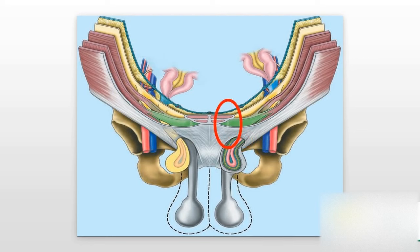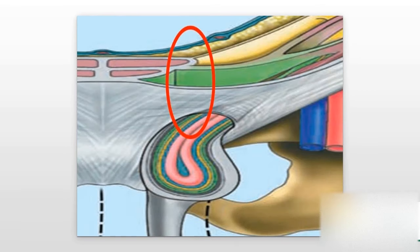There is another type of hernia. If there is weakness of the muscles and the layers sitting deep to the external ring, then the bowel could essentially take a much more direct route. Therefore it's called a direct hernia.